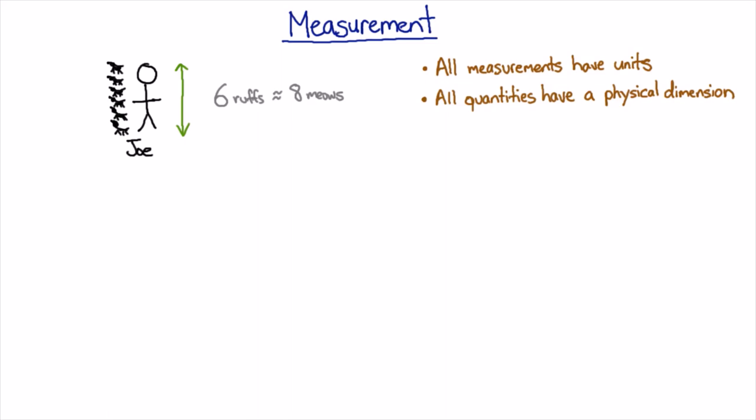So a measurement is describing some physical quantity, and that physical quantity has a dimension, and then we also describe it in a particular unit. So for example, one inch is equal to a certain number of centimetres. So the quantity on the left is a length, and the quantity on the right is a length, and length is the dimension.